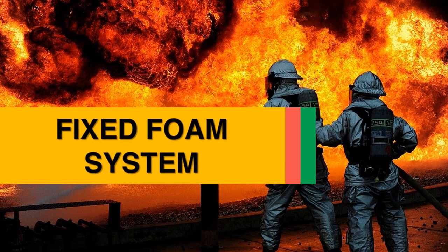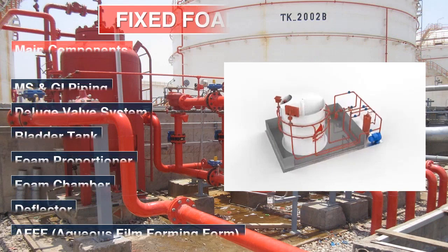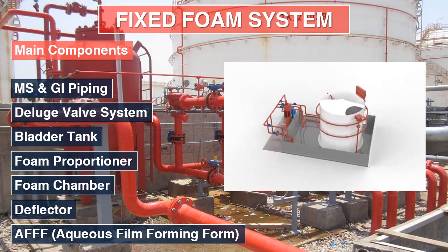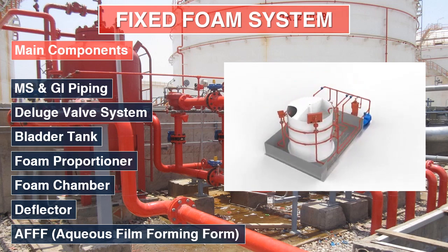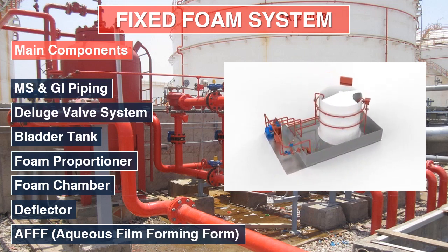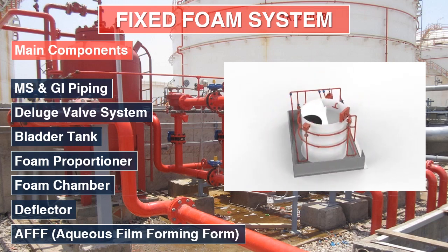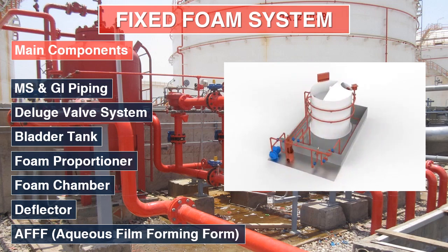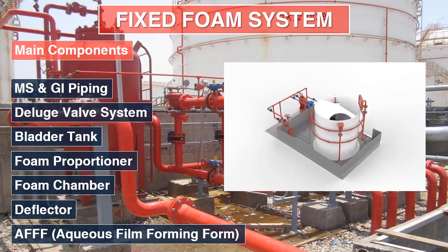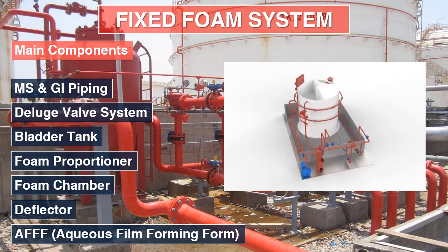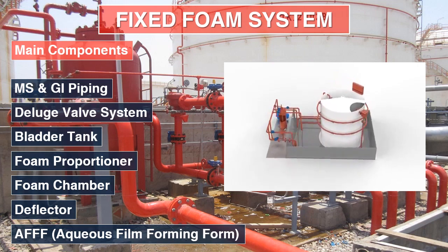We will see the fixed foam system, its elements, and working principle. Foam system is used for extinguishing fires involving flammable liquids. Foam is lower in density than flammable liquids. It is a blanketing and cooling agent produced by mixing water and foam concentrate. It flows freely over a burning liquid surface and forms a tough, air-excluding continuous blanket that seals volatile vapors from access to air. The system employs a bladder tank proportional system for induction of foam concentrate.